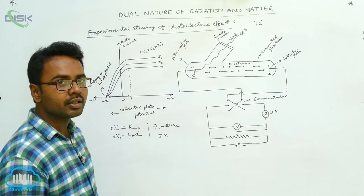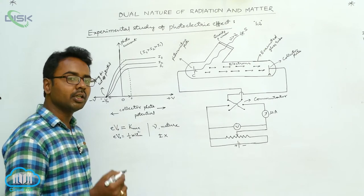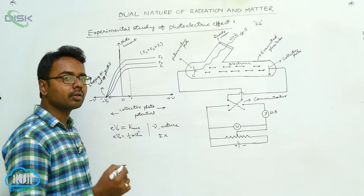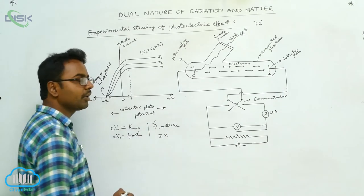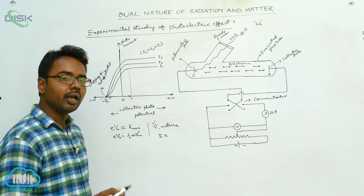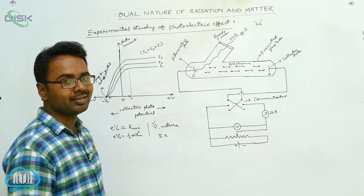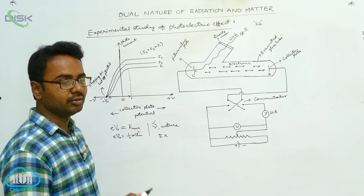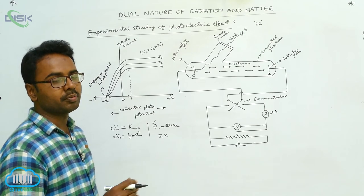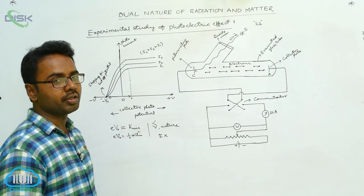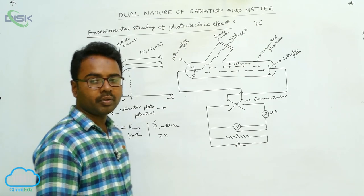As intensity increases, the energy of electrons cannot be increased. The energy of electrons can only be increased by increasing the frequency. If frequency increases, energy of electrons increases. If energy of electrons increases, we need more stopping potential — a more negative potential must be applied to the collector plate to stop the electrons.